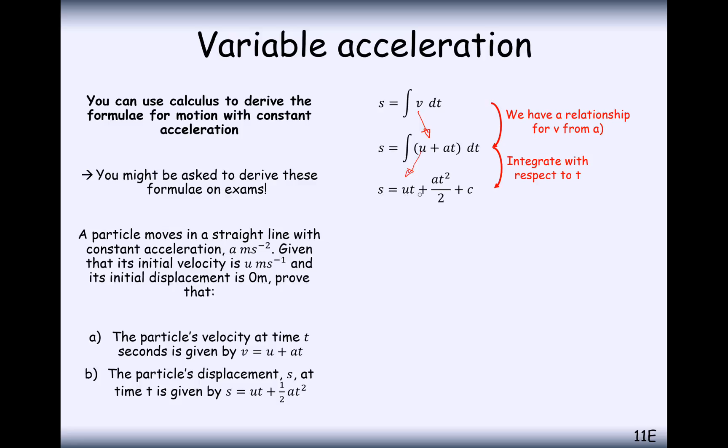So S equals U T plus A T squared over 2 plus C as well. Constant of integration. When T equals 0, displacement is equal to 0. So substitute those in, C comes out to be 0. So just substituting that back into our original formula, C is equal to 0, and then just rearranging the algebra slightly, we get S equals U T plus a half A T squared.